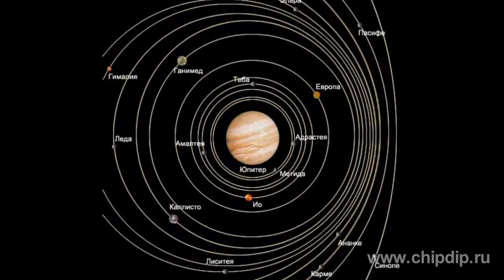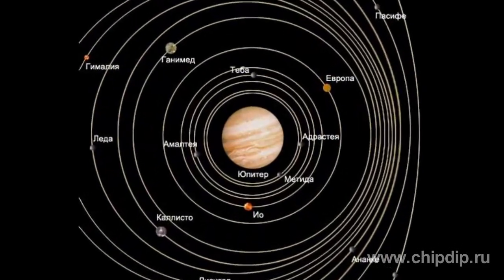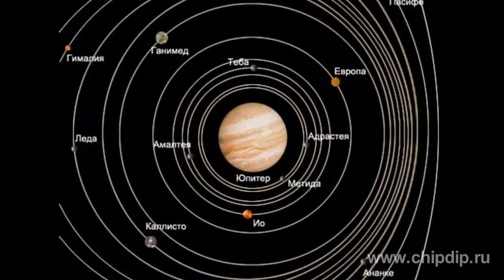The magnetic field of a planet depends on its structure of the core, its composition and physical state. For example, Venus doesn't have its own field and the density of other planets varies. The fields of the Moon and Mercury are less intensive than that of the Earth, and Saturn's and Jupiter's fields are much more intensive.